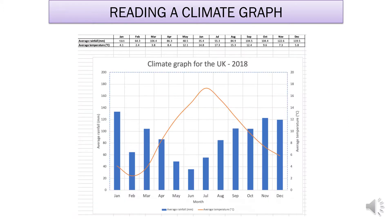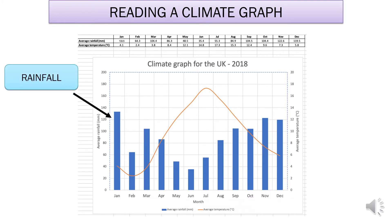This is what the climate graph looks like — it's showing us the climate for the UK over the year 2018. The blue bars show the bar chart, representing rainfall — how much rain has fallen on average every single month — and we read that from the y-axis on the left. So the left axis tells us the amount of rainfall in millimetres. For example, in January it's about 135 millimetres of rain.